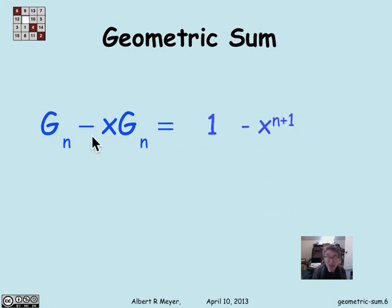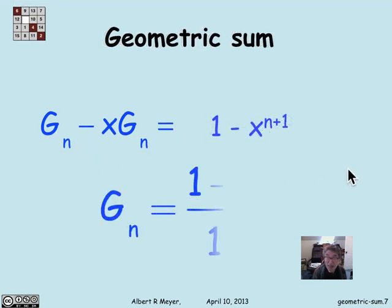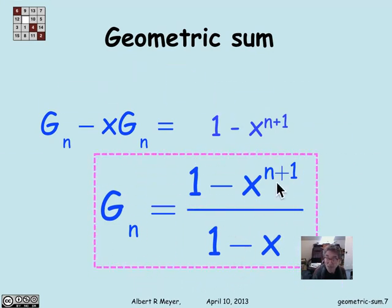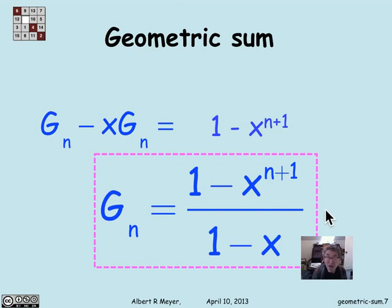We have this nice elegant formula. Factoring out g_n on the left gives g_n times (1 minus x), so the result is that g_n equals 1 minus x to the n plus 1, all over 1 minus x. This is actually a formula we proved before by induction, but when we did it by induction there was no clue about who was the clever person to think of this formula. Now you know how that clever person found it — it's a standard trick we'll see more of when we look at generating functions.